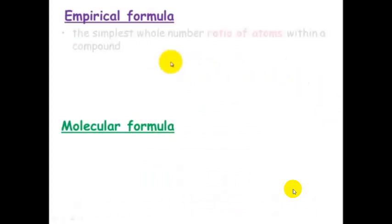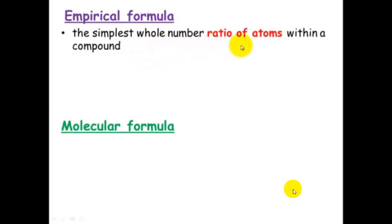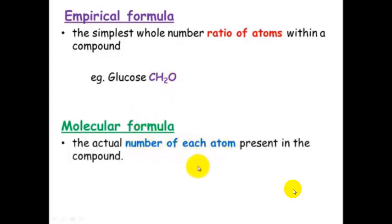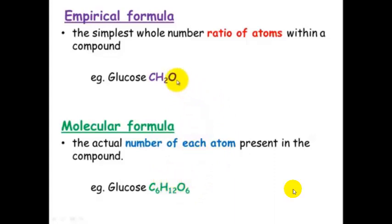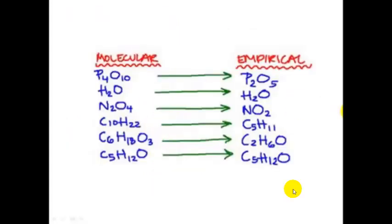Empirical formula is the simplest whole number ratio of atoms within a compound. For example, glucose would be CH₂O. This is in comparison to a molecular formula, which is the actual number of each atom present in the compound. Glucose's full molecular formula is C₆H₁₂O₆. If you divide all of those numbers by 6, the simplest whole number ratio is one carbon, two hydrogens and one oxygen.